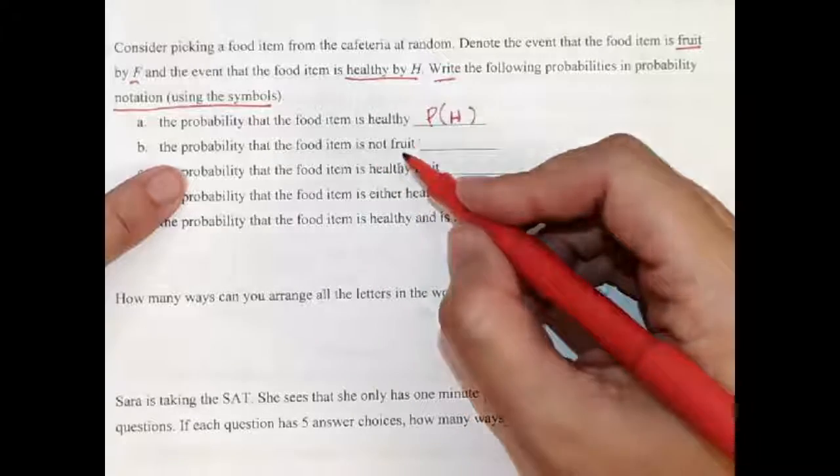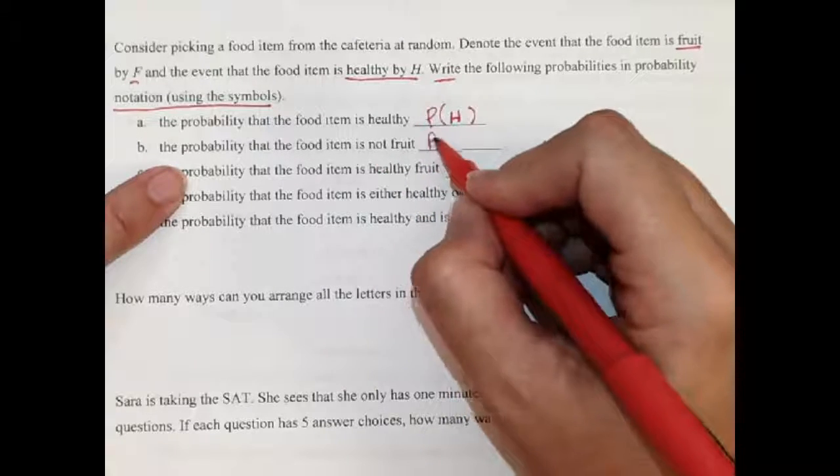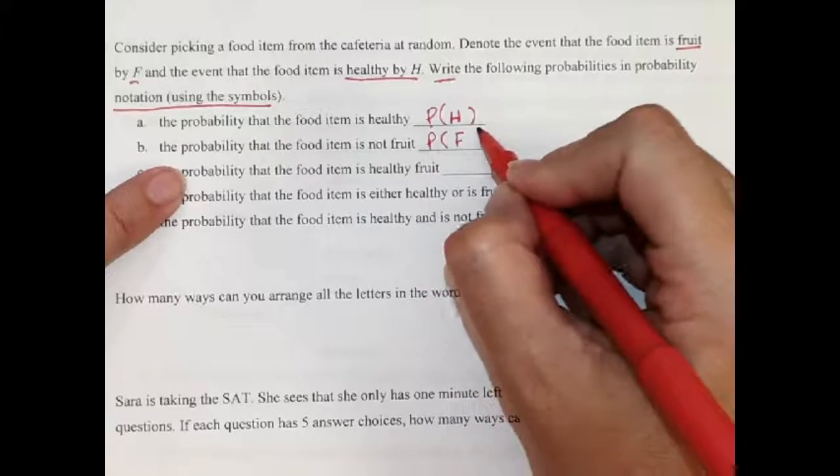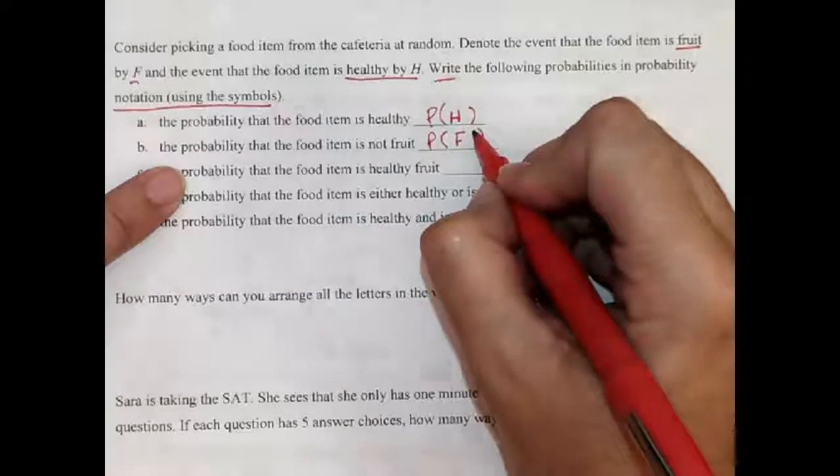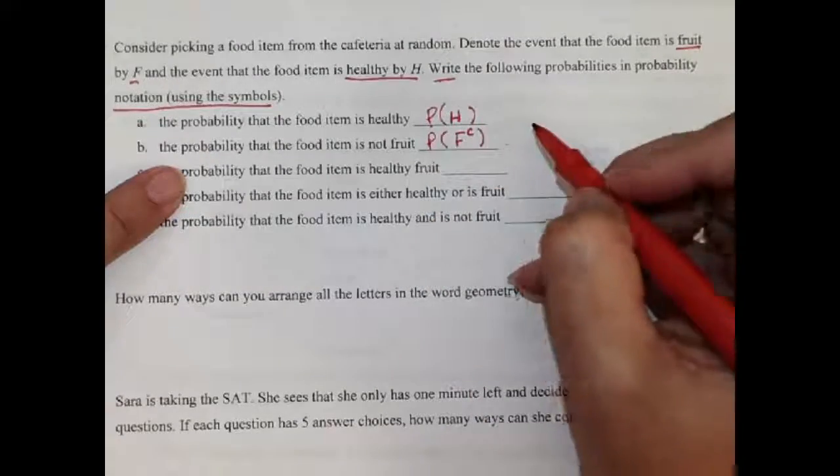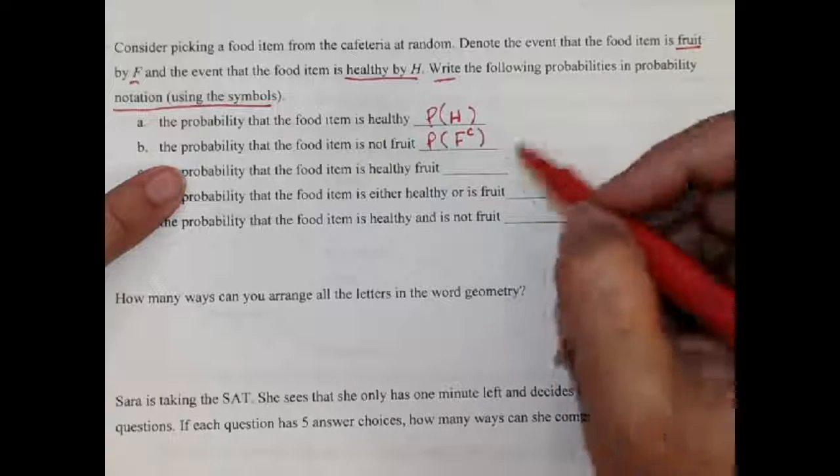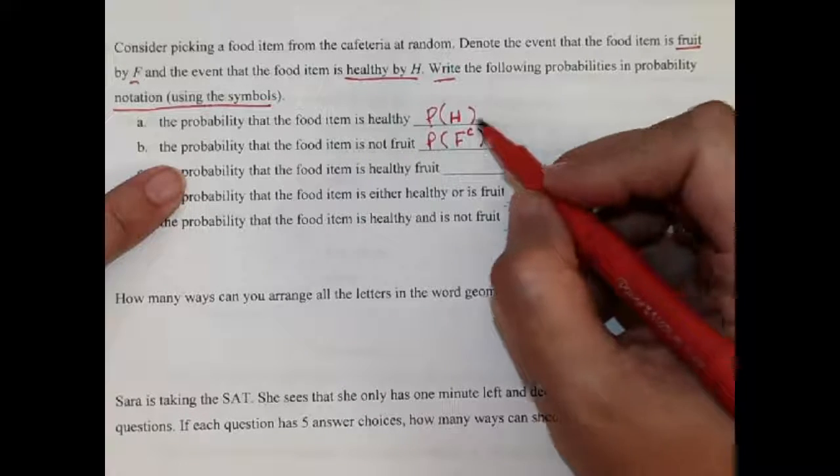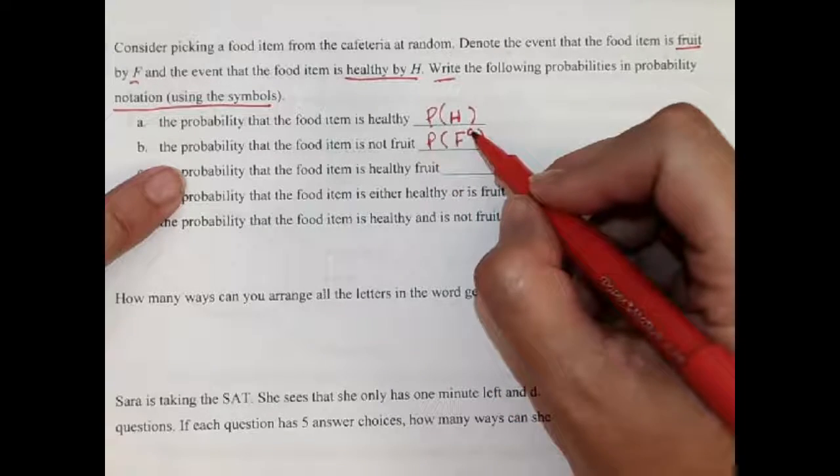The probability that it's not fruit. Well, if I write it like this, this is the probability that it is fruit. And remember, if I put a little C here, C stands for complement, and complement always means not. So this right here means the probability that it's not fruit.